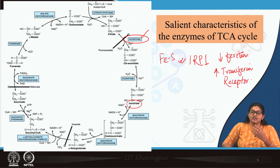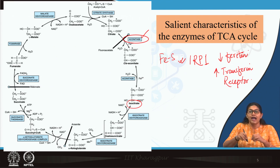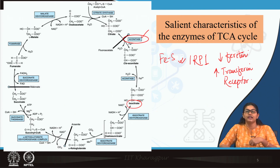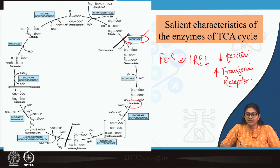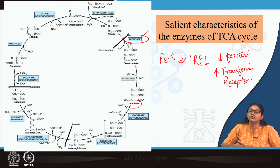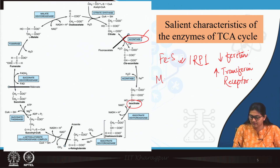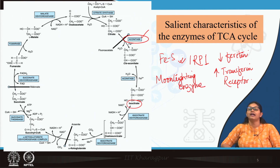Ultimately, there will be increased iron concentration within the cell, which will help reform the iron-sulfur center of Aconitase, restoring its active form. Basically, Aconitase regulates its own activity by modulating the concentration of iron in circulation. This is why Aconitase is also known as a moonlighting enzyme, because of its dual nature of activity.